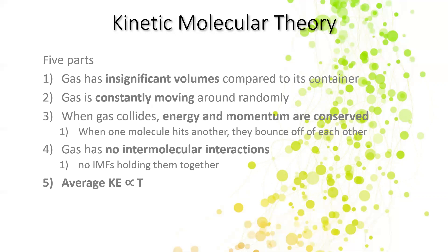First principle: gas has insignificant volume compared to its container. So if you were in a room and you were able to hand-pick all of the oxygen molecules out of the air and compress them all into a tiny cube, that cube would be so much smaller than the actual room. Because, like one of those properties we talked about before, gas expands — it spreads out to fit the space that it's given. That's why gas has an insignificant volume compared to the room it's in.